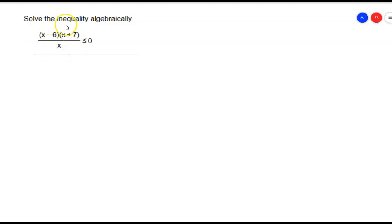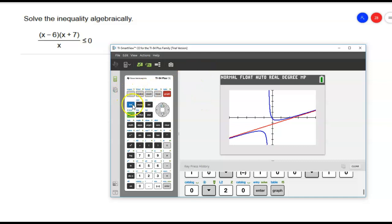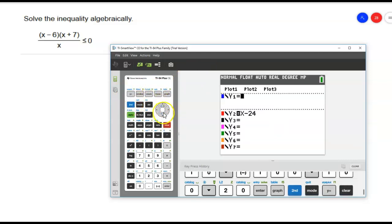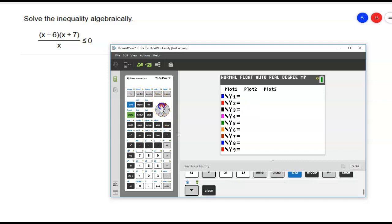So they want to know for which x values give us a y value that's less than or equal to 0. So I always like to start off putting this in my calculator here. So let's go ahead and go to my y equals, clear all the other stuff out.